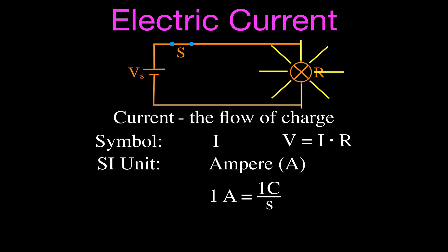One ampere is when one coulomb of charge passes a point in that circuit every second. So one ampere is one coulomb per second. If you don't remember what a coulomb is, you can click the little 'i' in the upper right-hand corner of this video to link to a video where I explain what a coulomb is. For example, when we write current, we can say that I, the current, is equal to 0.5 or 0.25 milliamperes.